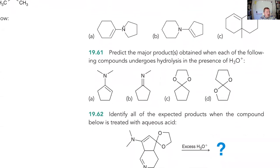If it's an imine, you're looking for where the double bond is — break that and replace the nitrogen with an oxygen. If it's an acetal, you're breaking the two ethers, the two oxygens attached to the same carbon — that was the carbonyl carbon to start. If it's an enamine, where you've got the alkene attached to the nitrogen is where it was a carbonyl to start. They all kind of work the same way.